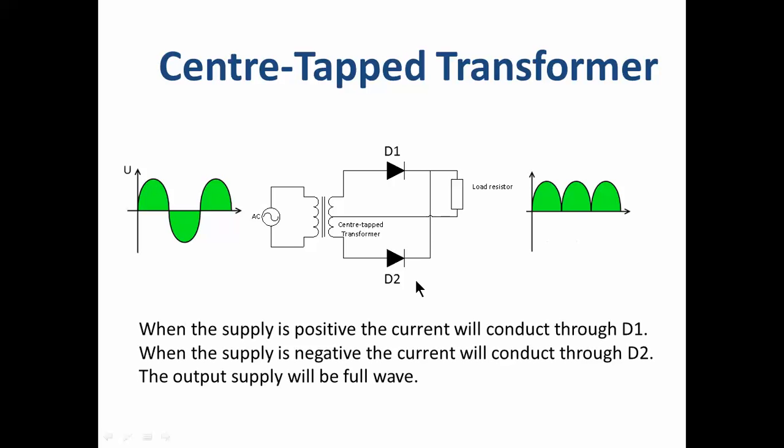So when the supply is positive, the current will conduct through D1. When the supply is negative, the current will conduct through D2. The output supply will be full-wave.